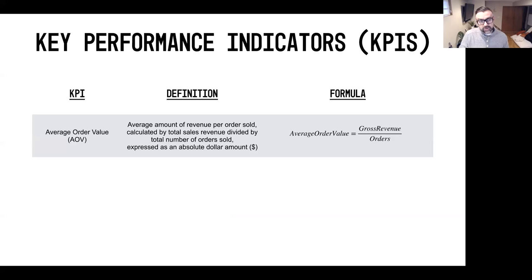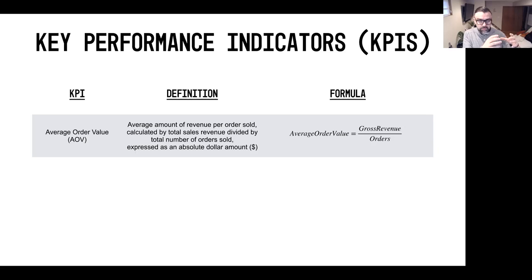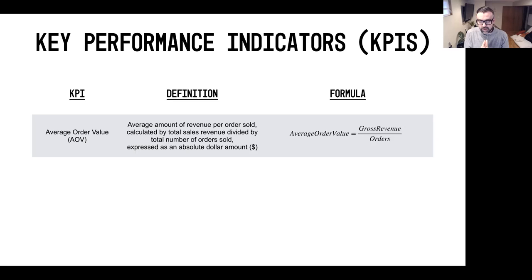Let's go through a few definitions in a bit more detail. Starting with average order value, often referred to as AOV. The average order value is the average amount of all the revenue sold on a per-order basis. It's a key barometer to understand how healthy your business is. It's simply calculated by taking all your gross revenue from sales divided by your number of orders — that yields your average order value.